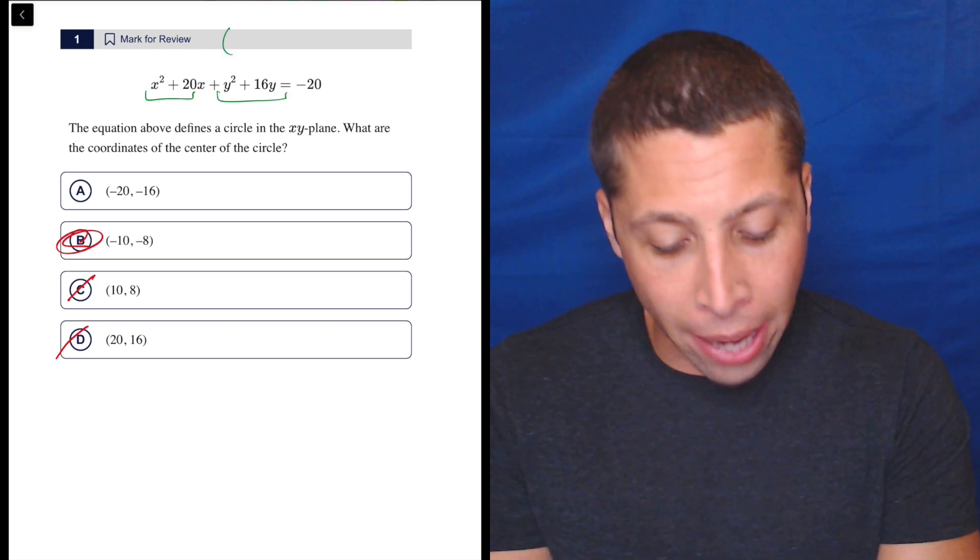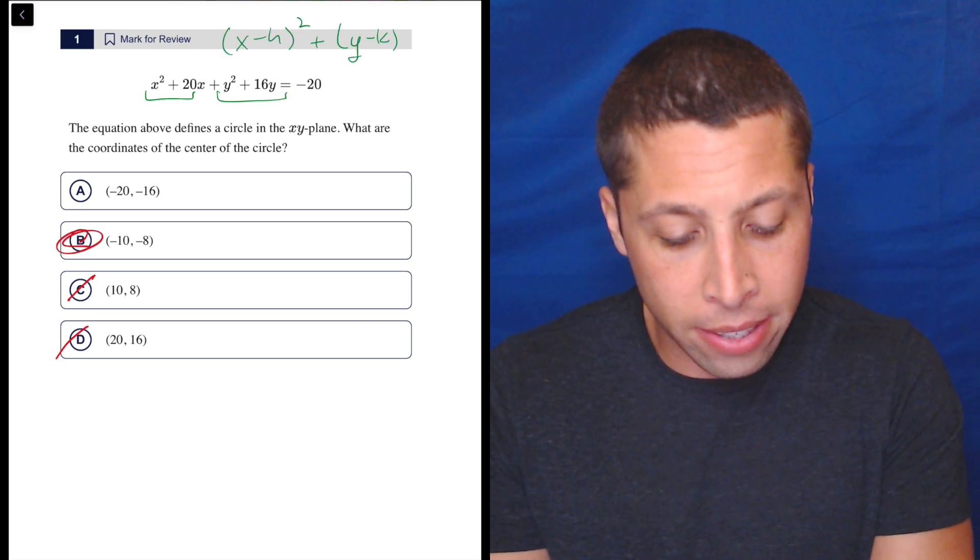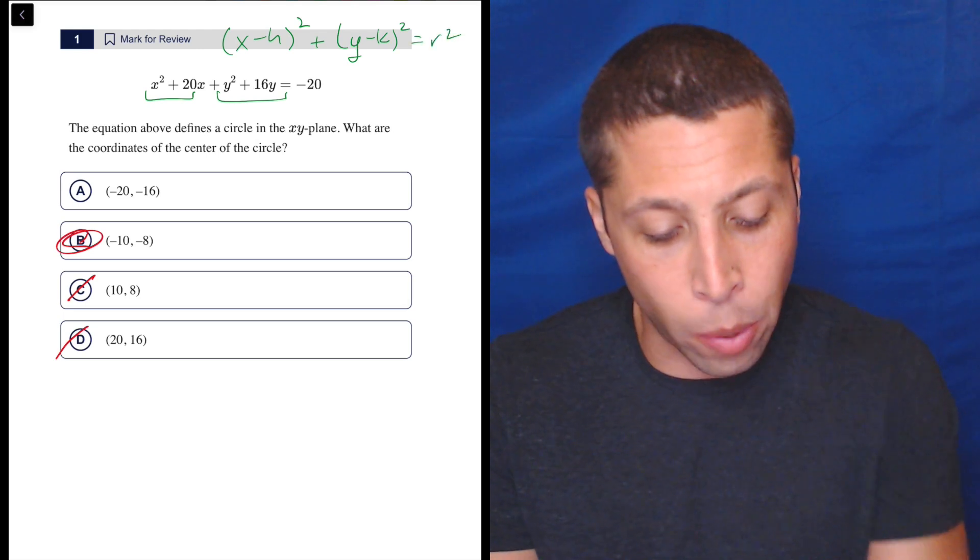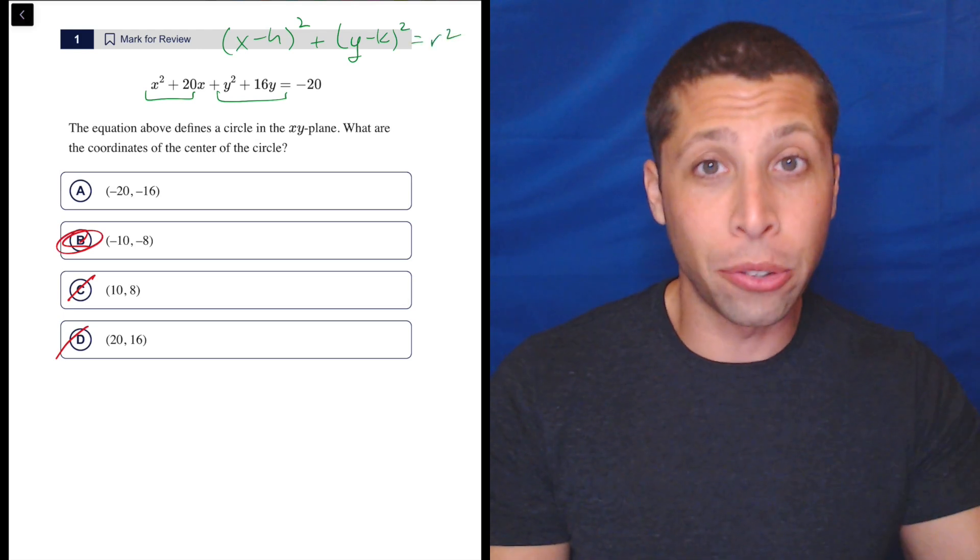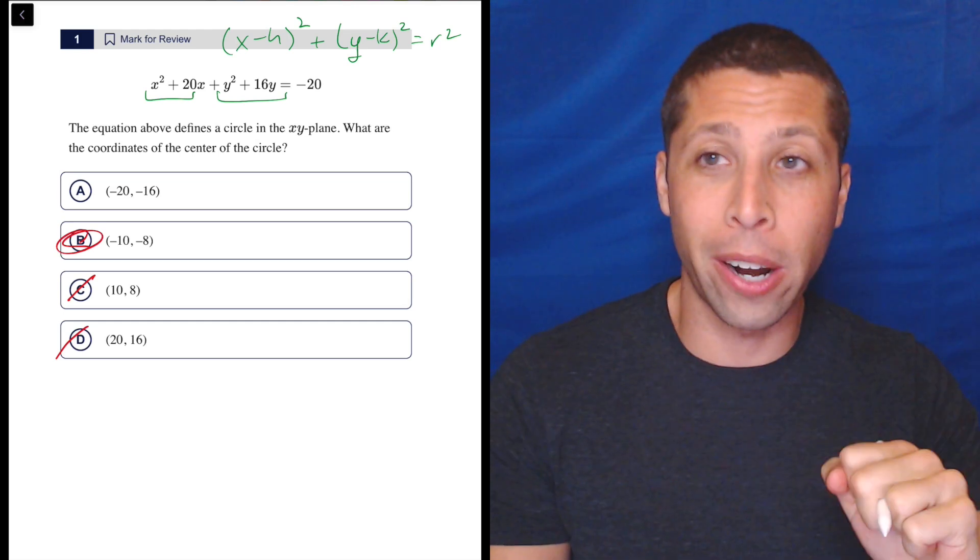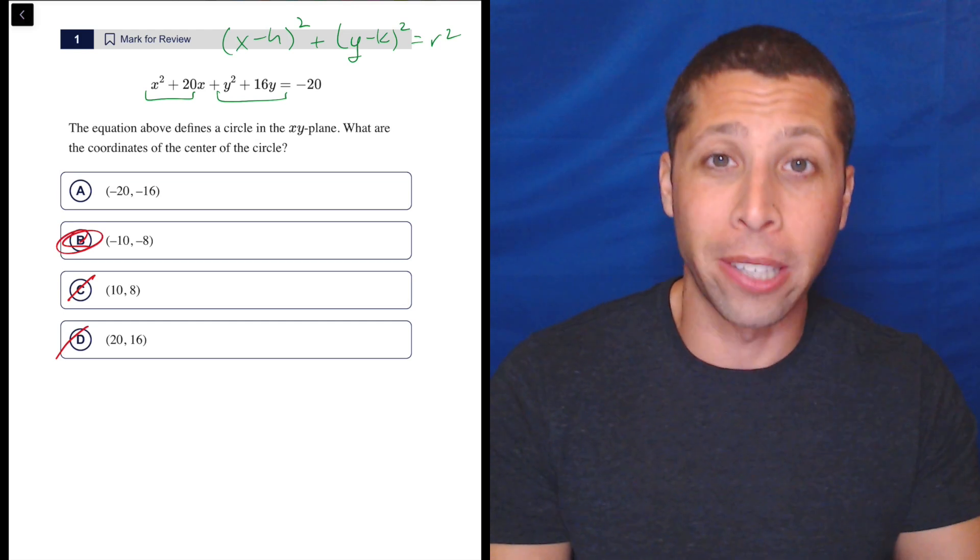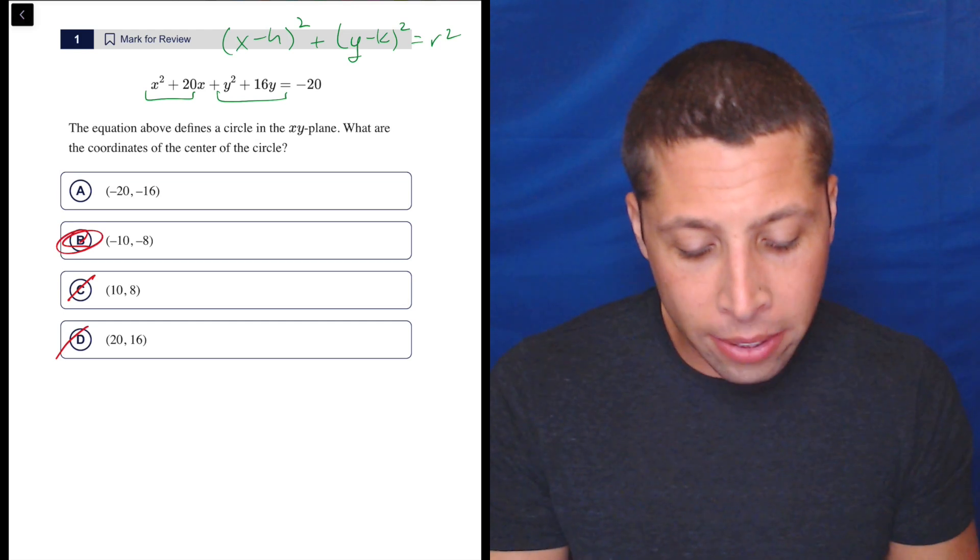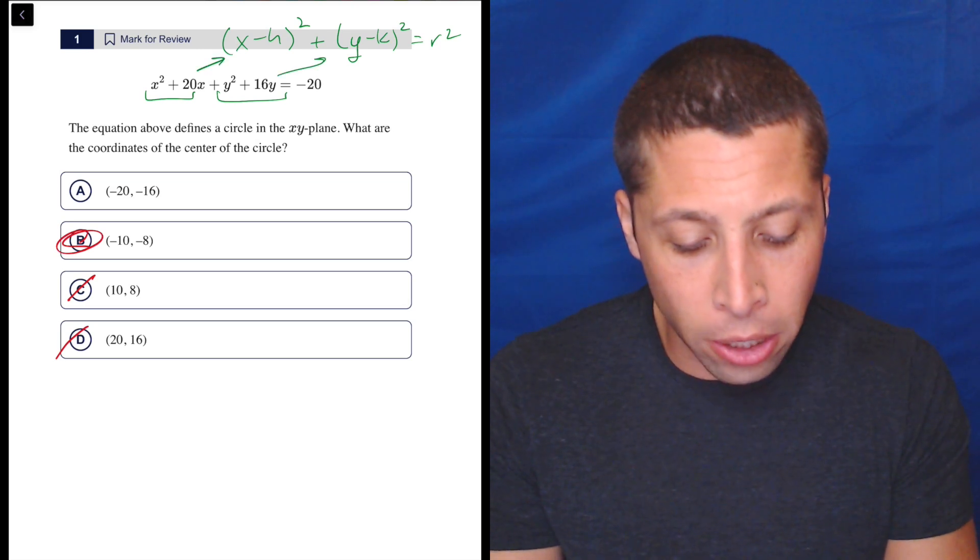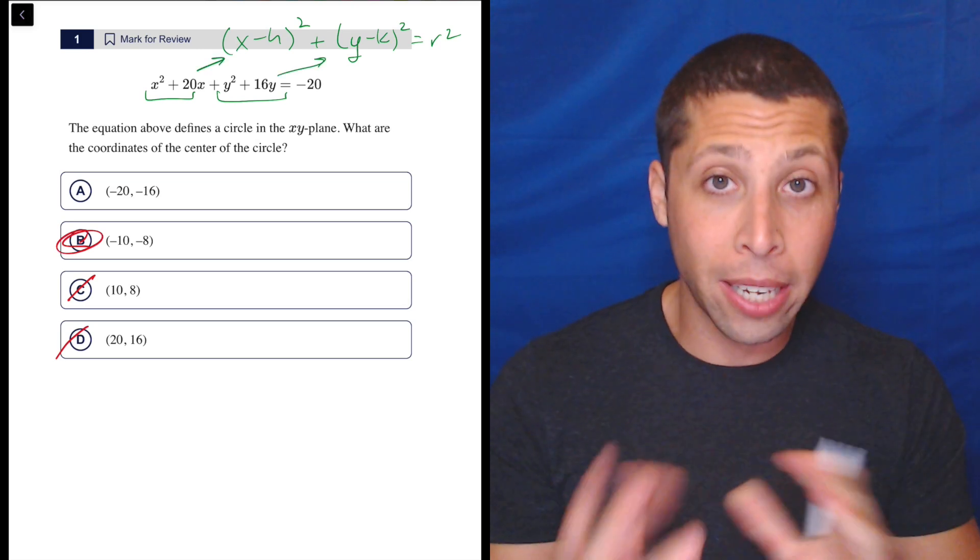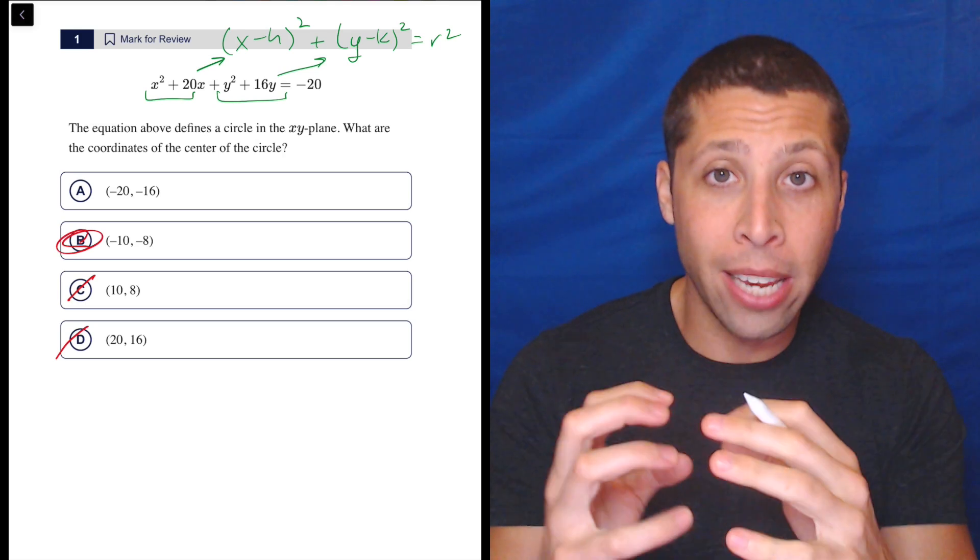essentially what we need is we need to get back to a place where we have (x minus h) squared plus (y minus k) squared equals r squared. That's the generic formula of the circle. You should memorize that. We will see questions in this series where sometimes it's just knowing that formula and that's all you need to do to answer it. But you can see we're not in that formula. So we have to get there. And the way we do it is we are going to turn each of these x, y components into a squared term.